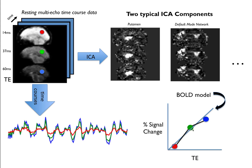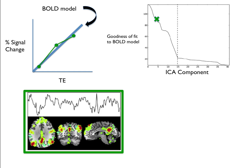In this example, we're looking at a region from the default mode network, and it does show TE dependence, so we keep that component as a good component. Here's what the data look like: we take all our ICA components — in this case starting with 40 — and sort them based on goodness of fit to the TE-dependent model. The ones that fit very well are high up on the curve, and there's always an elbow where it plateaus out.